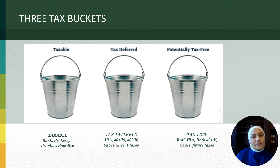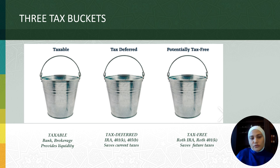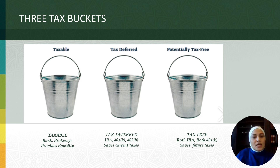And finally, we have the third tax bucket, or the tax-free bucket, which I like to describe as the Never Tax Me bucket. This bucket holds accounts like Roth IRA, Roth 401k, Roth 403b, and even Coverdell Education Savings. Your contributions are made with after-tax money, meaning you do not get a tax deduction for your contributions. However, Uncle Sam won't be visiting you ever, as long as you play by the rules. The choice between tax-deferred and tax-free depends on your future tax implications.